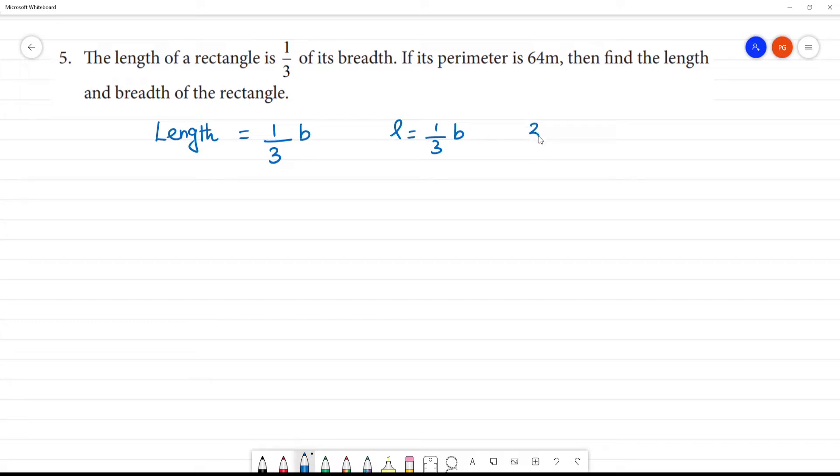Now, you can reposition this. That is 3l is equal to b. This is our equation.